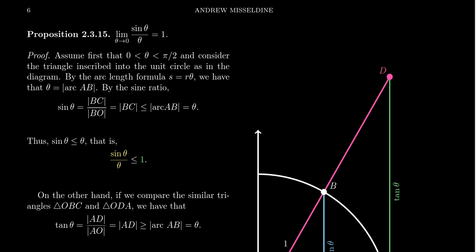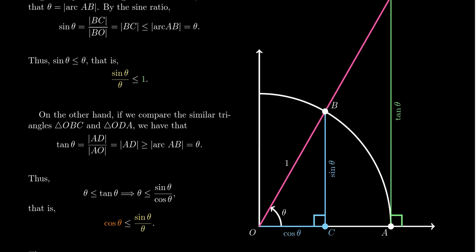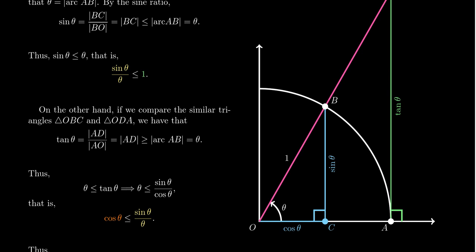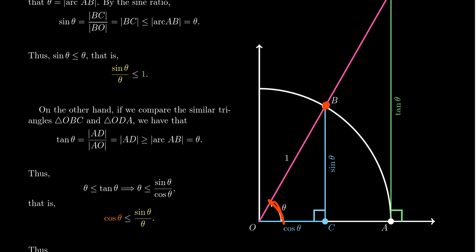We can draw a diagram of some inscribed triangles inside of this unit circle. The circle in play here is the unit circle. The radius of the circle is 1, centered at the origin. Consider the angle theta you see here. We have some point on the unit circle associated to angle theta, and it forms the triangle OCB. By the SOH-CAH-TOA relationship, sine is opposite over hypotenuse, cosine is adjacent over hypotenuse, and tangent will be opposite over adjacent.